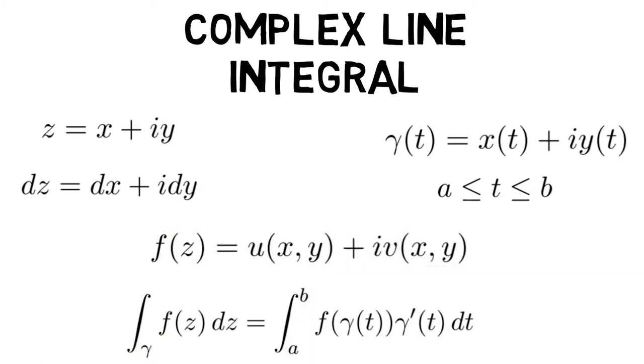Given these prerequisites, we define the complex line integral in the plane gamma as integral of z dz in gamma equal to integral of a to b f of gamma of t into gamma dash of t dt.